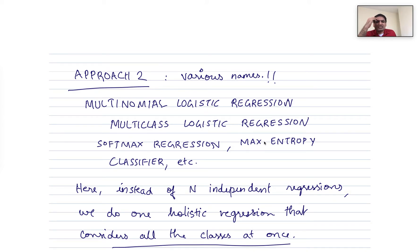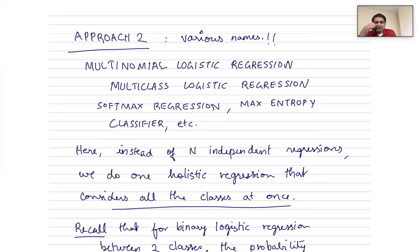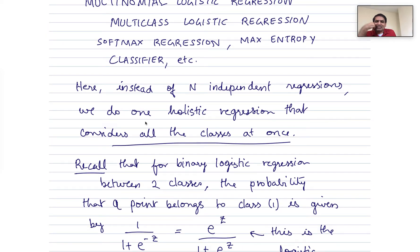So this is called softmax regression, sometimes called the maximum entropy classifier. Lots of names, unfortunately, for this thing, and sort of because many people in different fields have used this and given it their own names. It would be nice if these things had a single name that is appropriately descriptive, I suppose. But this is what we have.